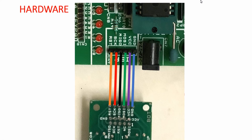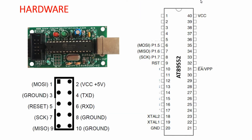If you don't have a development board you can build the circuit on a breadboard. Connect MOSI to pin 6, MISO to pin 7, SCK to pin 8, Reset to pin 9, VCC to pin 40, and GND to pin 20 of the microcontroller.